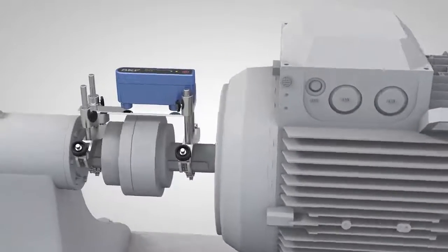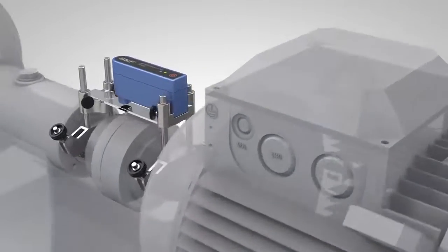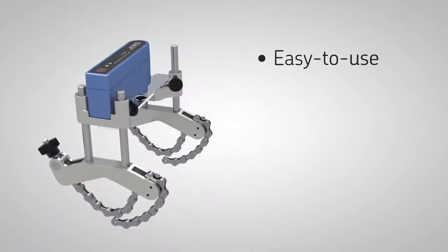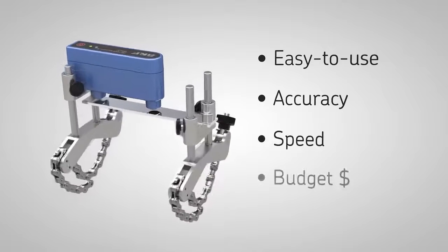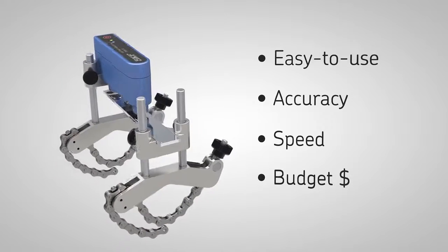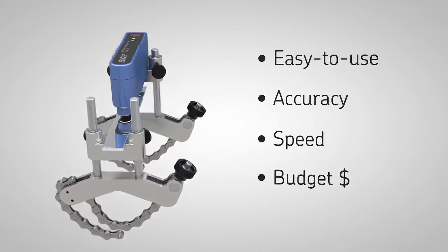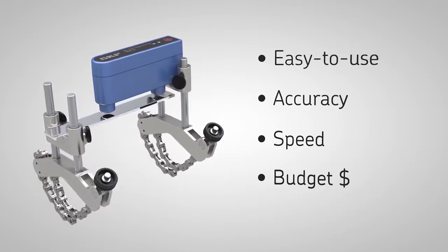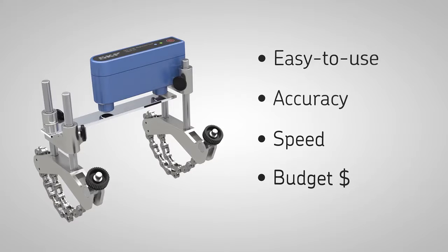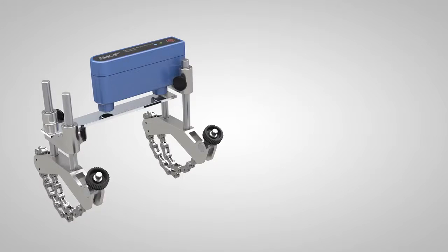the SKF shaft alignment tool TKSA 11 is an excellent choice for basic and advanced shaft alignment. It is easy to use, allows accurate and fast machine alignment and is affordable for almost every budget. Using the TKSA 11 assists you in increasing the reliability of your machines, prolonging the overall lifetime and reducing your maintenance costs.